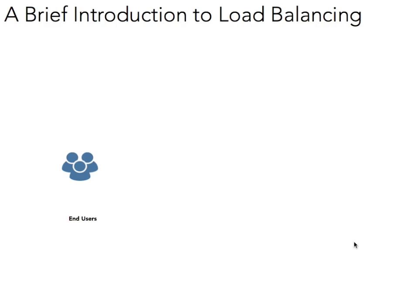Brief introduction to load balancing. Out in the world wide web, we have our users and those end users will use a browser. In that browser, they will type in an HTTP address, something like http://www.somebusiness.com. That will then go to DNS. DNS will use an A record or CNAME or some sort of conversion to convert that human-readable address into an IP address. And that IP address will be a static or fixed IP address which will send your traffic from your browser to that IP address through the internet.